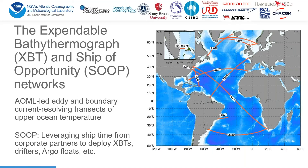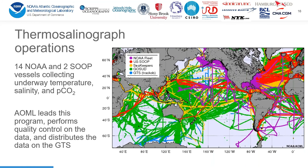We lead the XBT and ships of opportunity networks. These are transects that are eddy and boundary current resolving of the upper ocean heat, and we work with partners in private industry to leverage ship time to deploy XBTs, Argo floats, drifters, and other components of this system. We operate thermosalinographs on 14 NOAA and two ships of opportunity vessels to collect underway temperature, salinity, and pCO2. We also take those data, do near real-time quality control, and distribute those data worldwide.